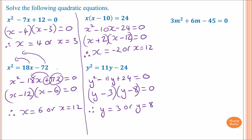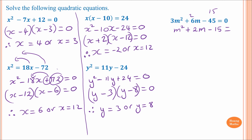Next: 3m squared plus 6m minus 45. You can see the common factor of 3m squared, 6m, and 45 is 3. Since it's an equation, I can divide every term by 3: 3m squared divided by 3 is m squared, 6m divided by 3 is 2m, and 45 divided by 3 is 15. So it becomes m squared plus 2m minus 15 equals zero.